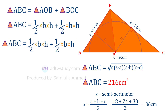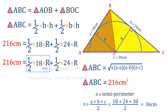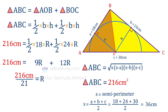Therefore we can apply the half base times height formula. The area of the bigger triangle ABC is 216 square centimeters. The base of triangle AOB is 18 centimeters and height is r, and the base of triangle BOC is 24 centimeters and height is r. So half of 18r is 9r and half of 24r is 12r. Therefore 216 = 21r, giving r = 216 ÷ 21, which equals approximately 10.29 centimeters.